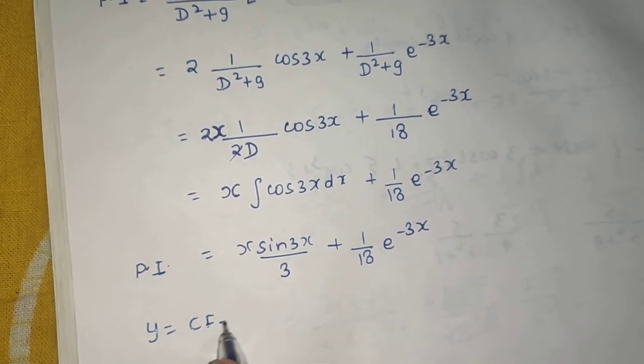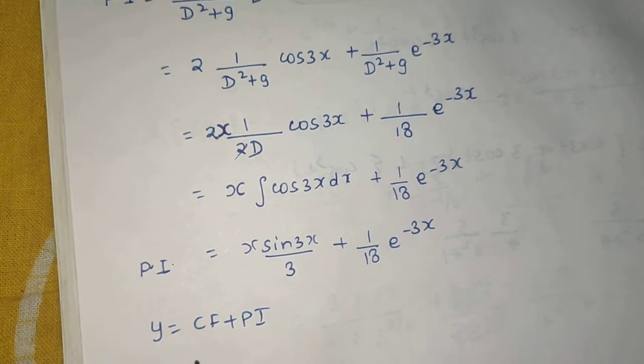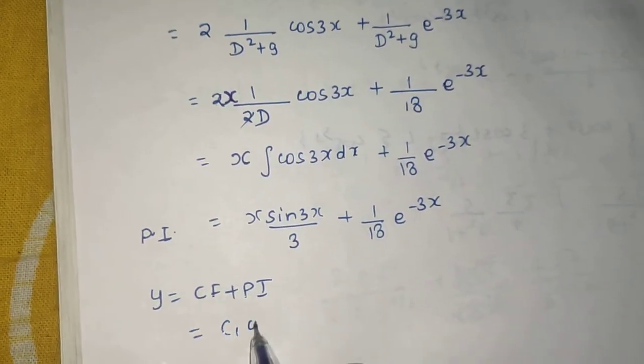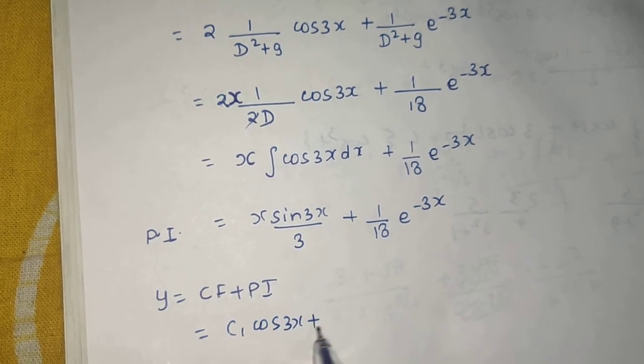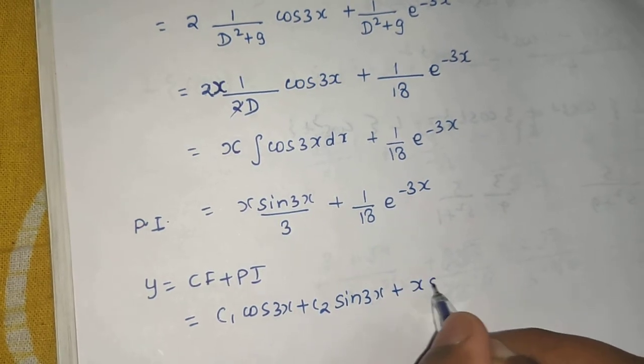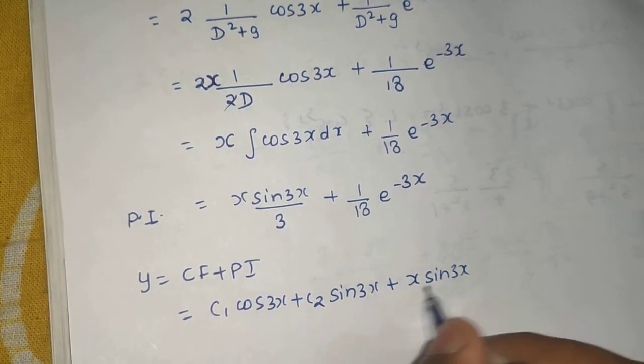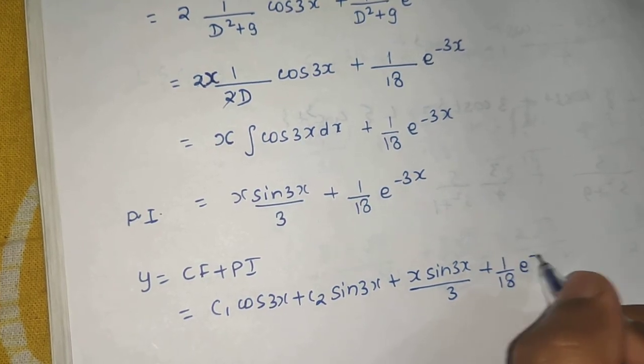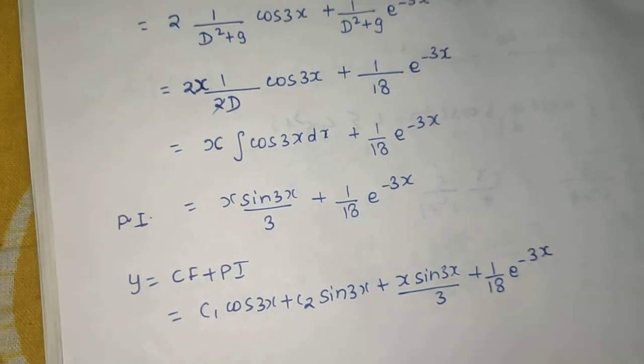Now y is CF plus PI. CF was c₁ cos 3x plus c₂ sin 3x, and PI is x sin 3x over 3 plus 1 over 18 e power minus 3x.